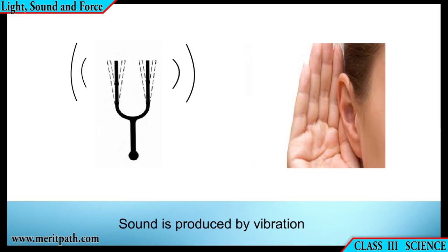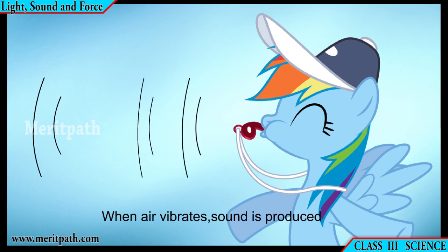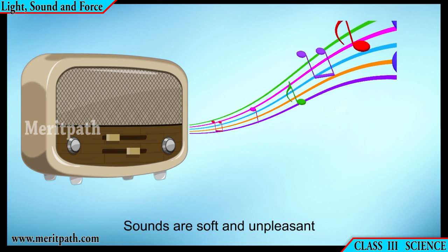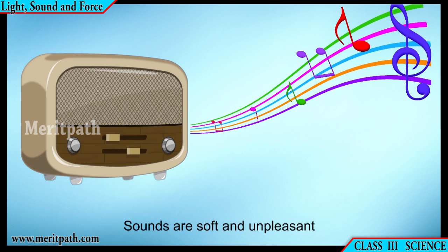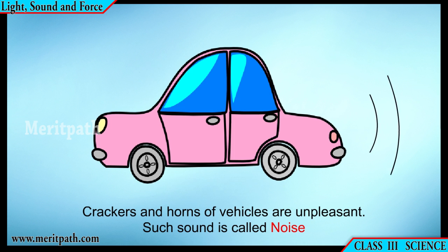Sound is produced by vibration. Vibrations are fast, repeated movements. When air vibrates, sound is produced. When vibrations reach our ears, we hear sounds. Crackers and horns of vehicles produce unpleasant sound, which is also called noise.